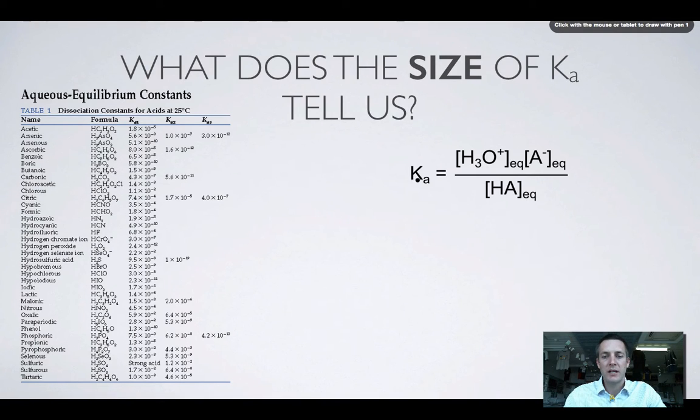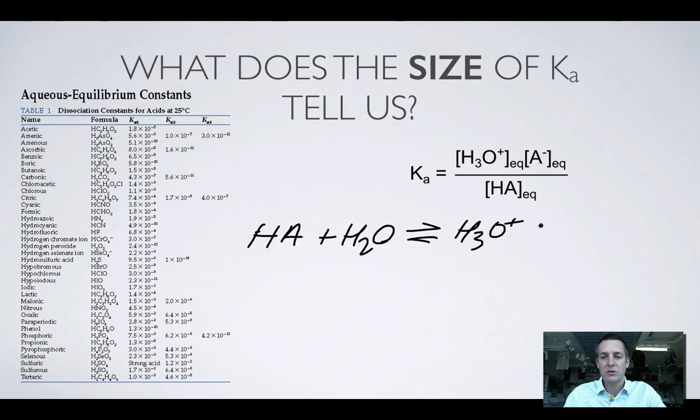So the larger K is, the more over to the right our equilibrium will lie. So this hydrolysis of the acid, or its dissociation, will lie far over to the right-hand side if Ka is large.